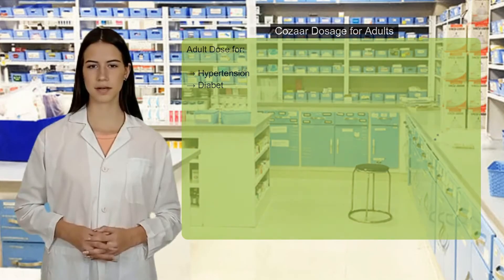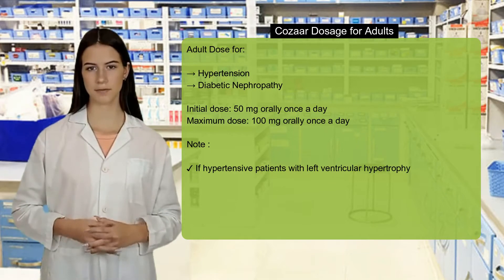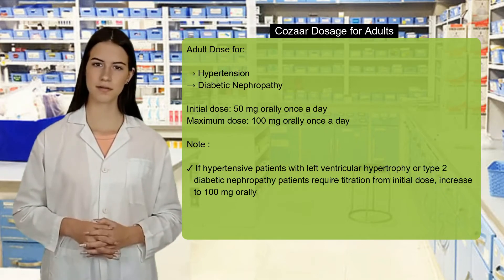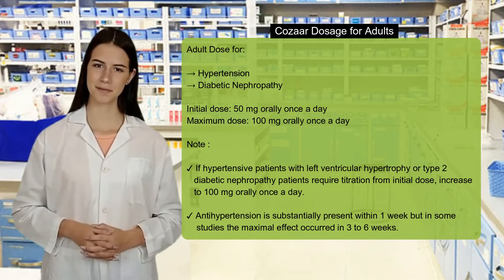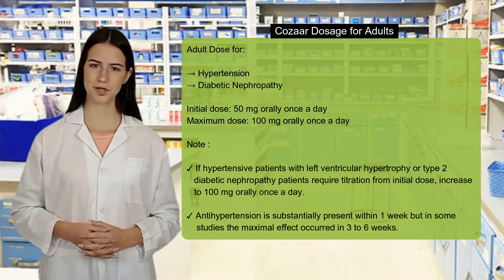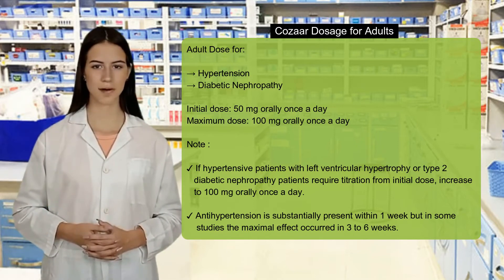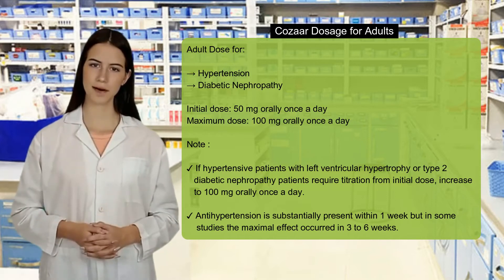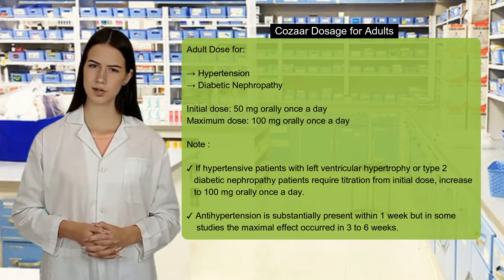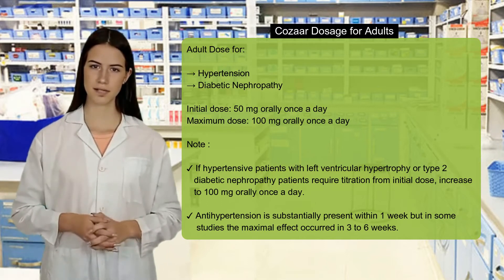Cazara dosage. Adult dose for hypertension and diabetic nephropathy: initial dose, 50 mg orally once a day; maximum dose, 100 mg orally once a day. If hypertensive patients with left ventricular hypertrophy or type 2 diabetic nephropathy patients require titration from the initial dose, increase to 100 mg orally once a day.